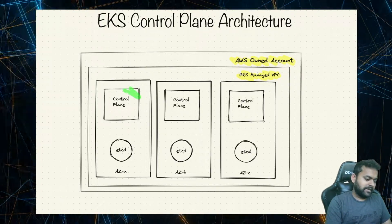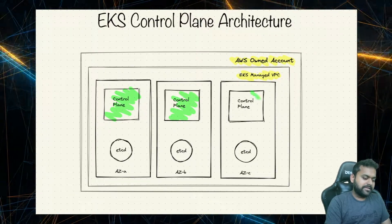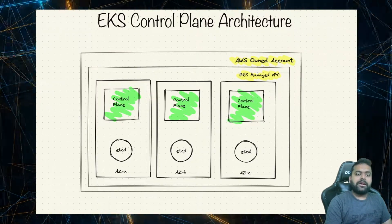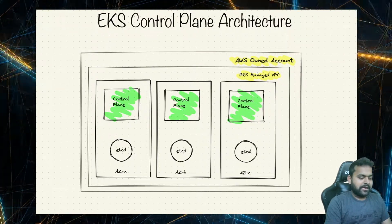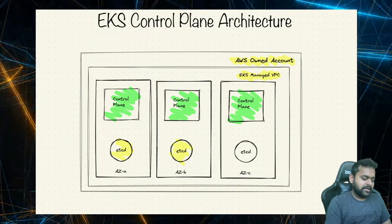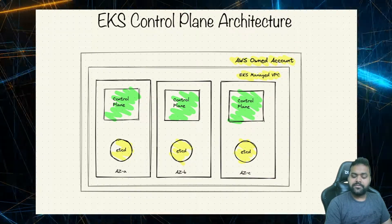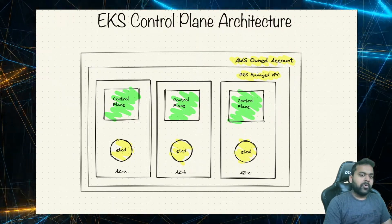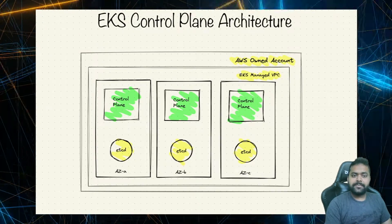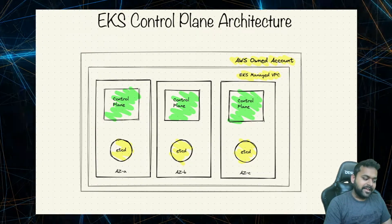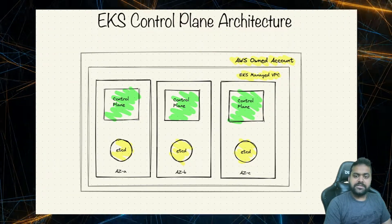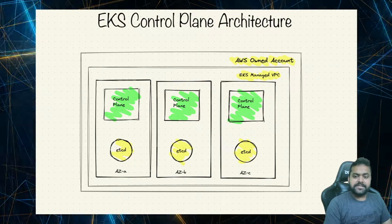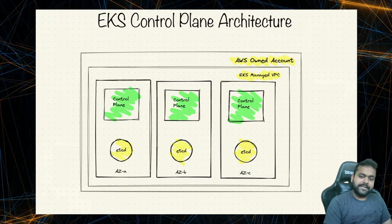When we say control plane here, that means these are components such as the API server, scheduler, and kube-controller-manager. And there is etcd, which is a key-value store that stores all the information in Kubernetes. Along with this, when we say managed Kubernetes, it means AWS manages the scaling of this control plane, configurations, backups, patching of the underlying machines, upgrades — everything is taken care of by AWS.